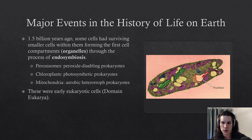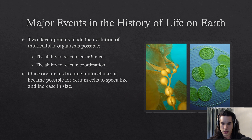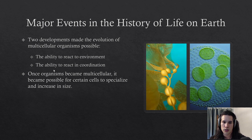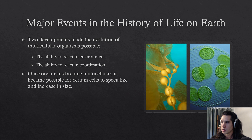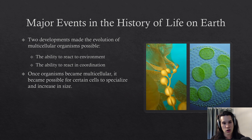These eukaryotes had a huge advantage over all other prokaryotes. Two developments made the evolution of multicellular organisms possible: first, the ability to react to their environment, and second, the ability to react in coordination with other organisms of the same type. There are trade-offs for being in a group, like sharing resources, but single cells can divide tasks among other cells to make the larger colony more efficient.